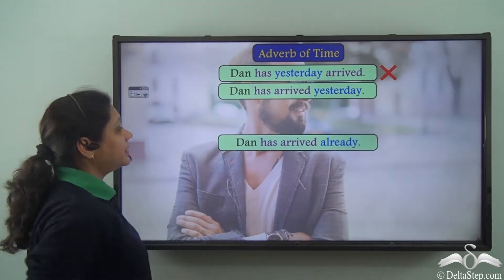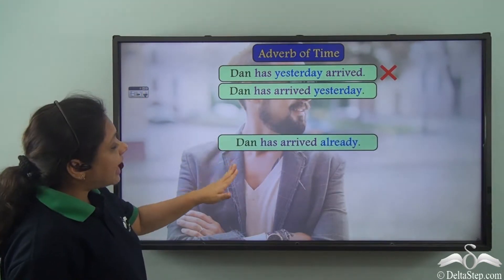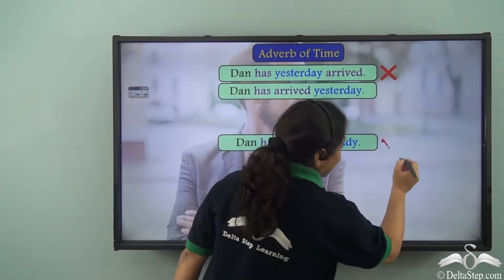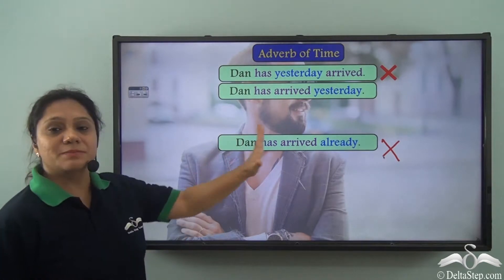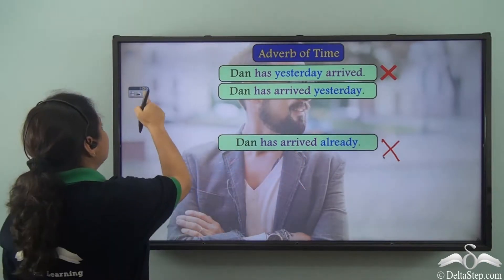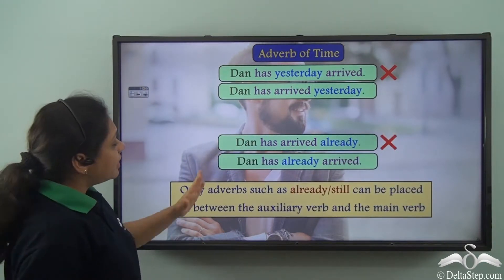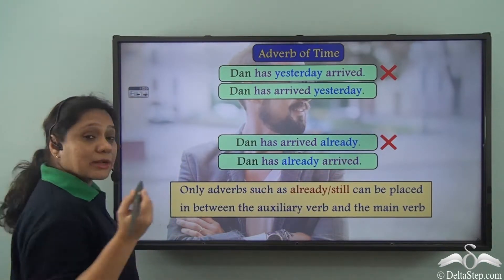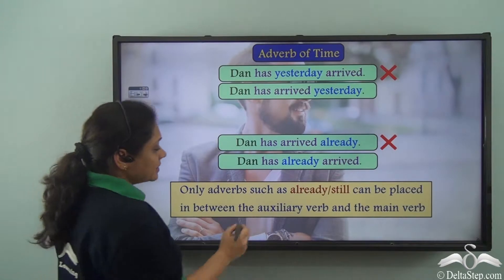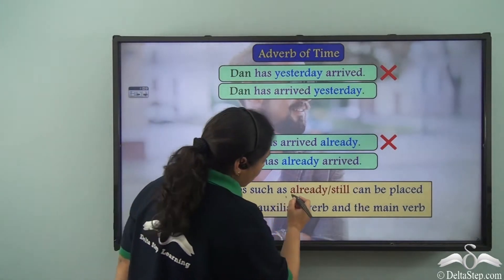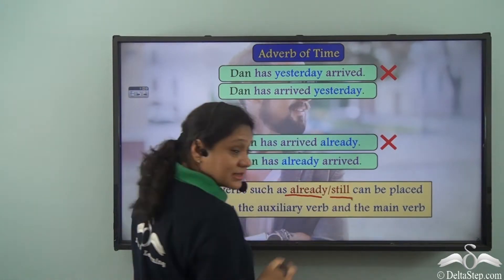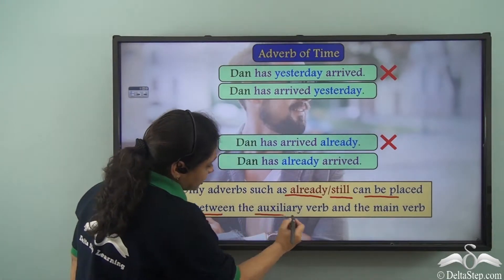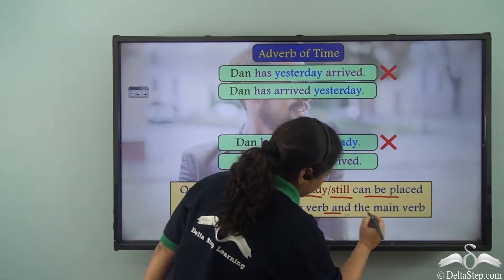Having said that, can we say 'Dan has arrived already'? No — in this case this placement is not correct. The correct placement would be 'Dan has already arrived.' So we see that only adverbs of time such as 'already' and 'still' can be placed in between the auxiliary verb and the main verb.